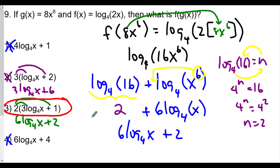So to summarize: we computed the composite function, combined everything, then rewrote it as two logs using the product rule. We evaluated log base 4 of 16 to be 2, used the power rule to turn log base 4 of x⁶ into 6 times log base 4 of x, and then matched to the correct answer choice.